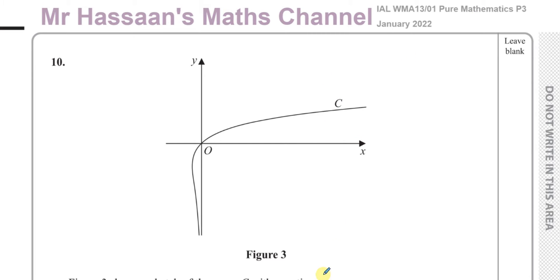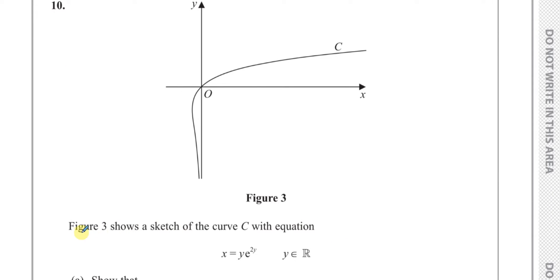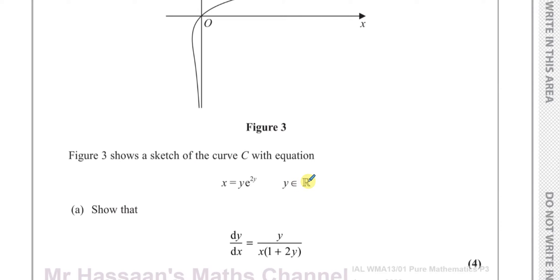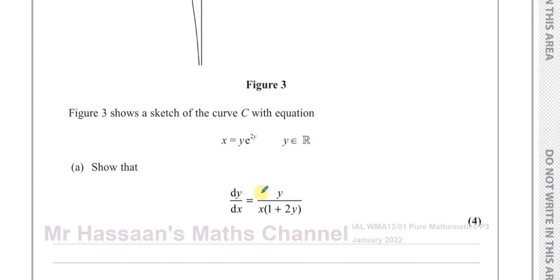Here we have a question which gives us this graph, figure 3. Figure 3 shows a sketch of the curve C with equation x equals y times e to the power of 2y, where y is an element of the real numbers. It says: show that dy/dx is equal to y over x times (1 plus 2y).